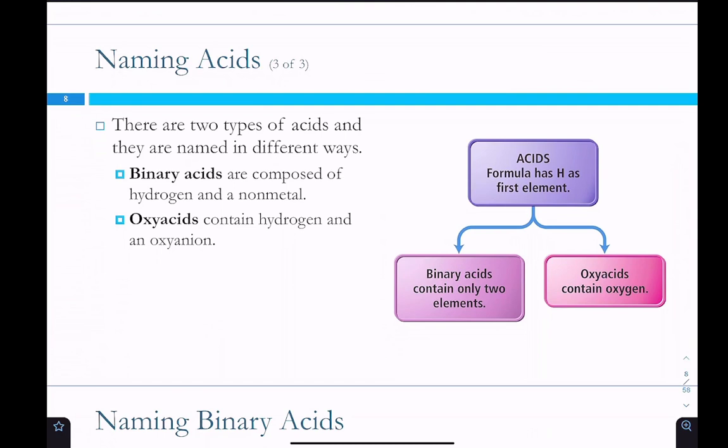These are the types of, two different types that we're going to name. Binary acids, which are just going to be hydrogen, and then a nonmetal. So, you're going to have two elements. One's going to be hydrogen, the other one will be another nonmetal. And then, oxy acids, which contain hydrogen, and then an oxyanion. We went over last time, all of those ways to remember the different oxyanions. Also help out with oxy acids.